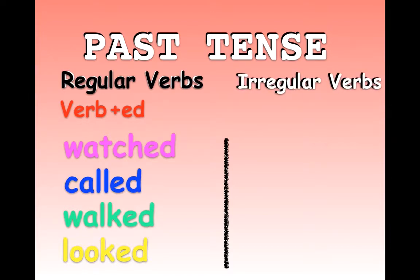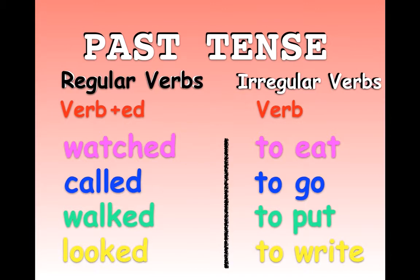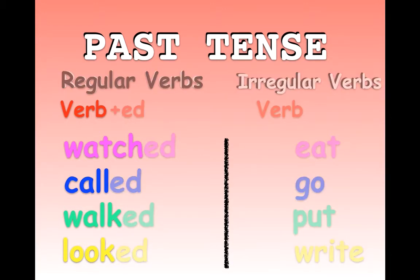There is another group of verbs called irregular verbs, and they are a little different and a little more difficult. Let's look at our verbs: to eat, to go, to put, to write. The first thing we do is remove the 'to' from the infinitive.